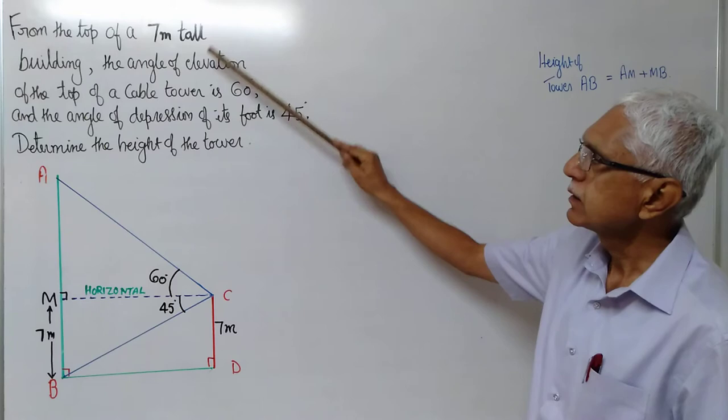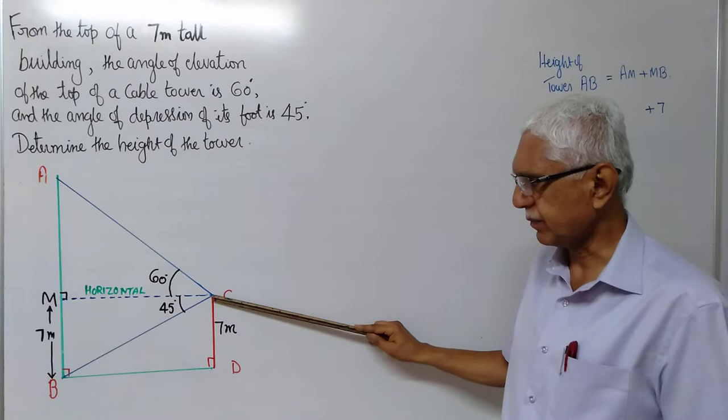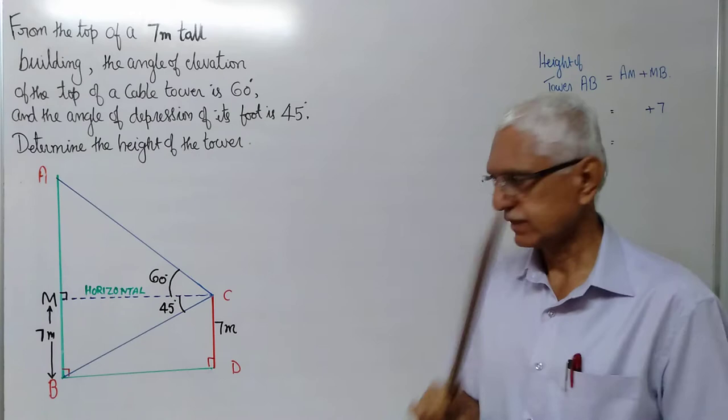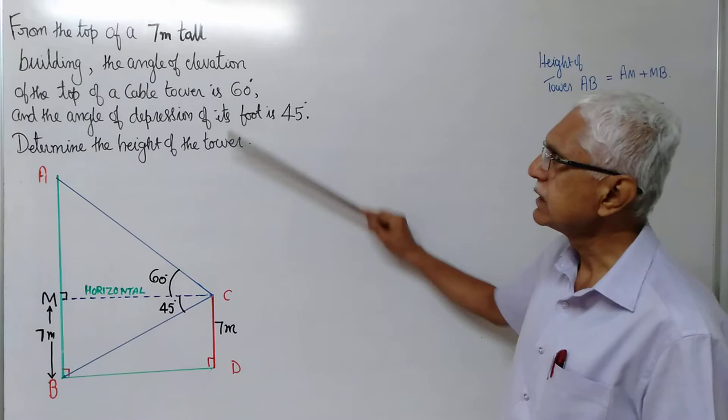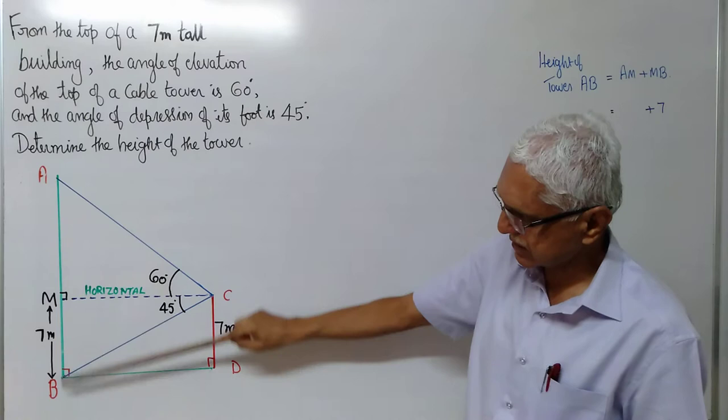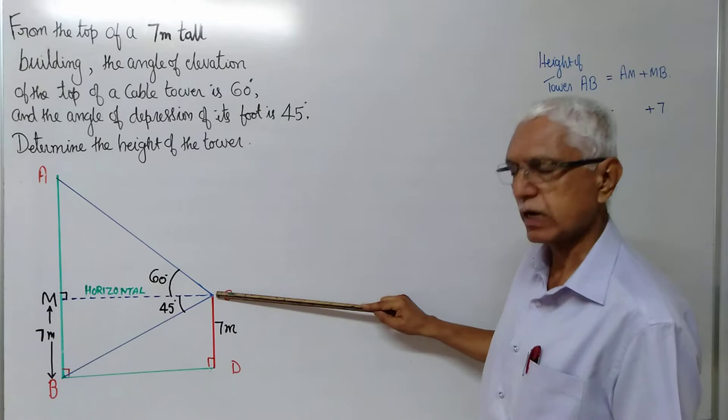So from the top, some person is standing on top of the building. We are not mentioning anything about his height, so the person is taken to be the point C. For that person who is on top of a building which is 7 meter, the angle of elevation of the top of the cable tower, this is the tower, cable tower. For a person who is above the building whose height is 7 meter, from this point, angle of elevation is 60 degrees.